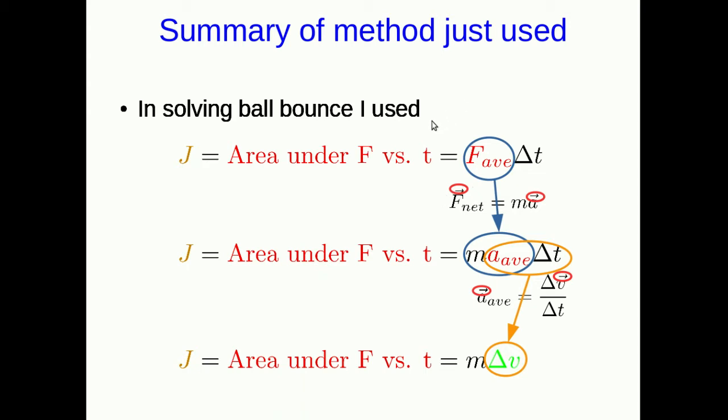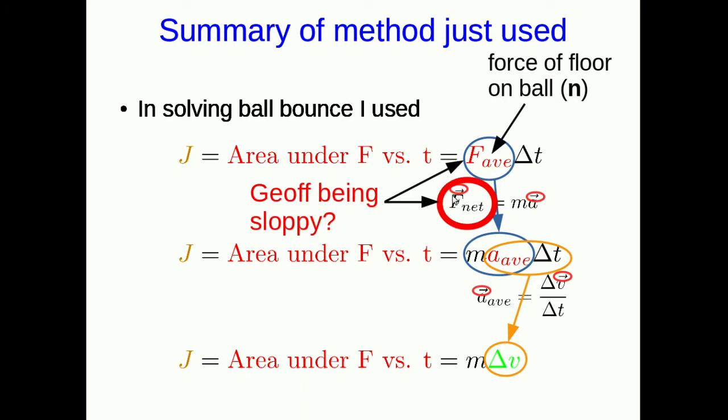But the other thing was more tricky. This F_av that I gave you was the force of the floor on the ball, or in other words, a normal force. But here I'm saying F_net. Am I just being sloppy? Because of course this ball would have also had a weight on it, and I completely ignored that.